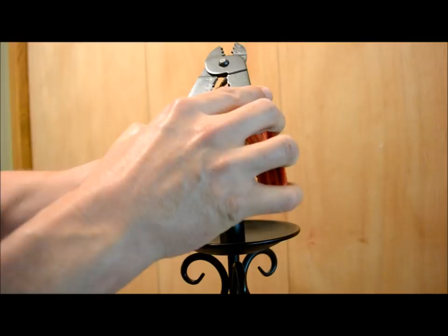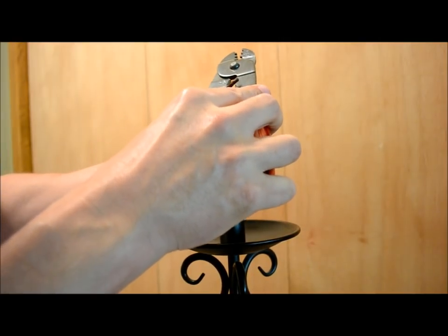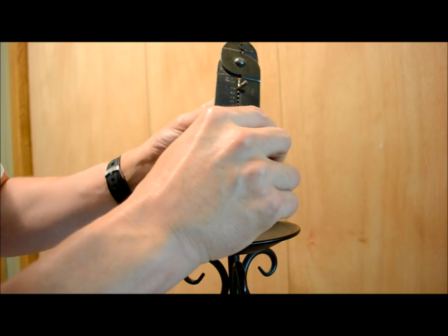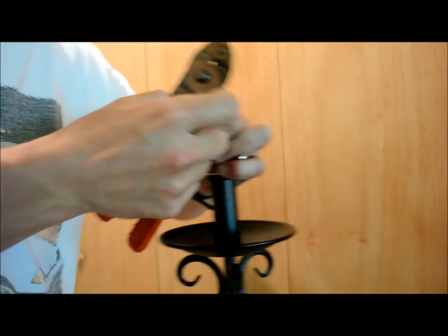Crimp it on the outside. First I'm going to start out with a 10 gauge I think. Crimp it, turn a little bit, crimp it more and then try to pull it off.